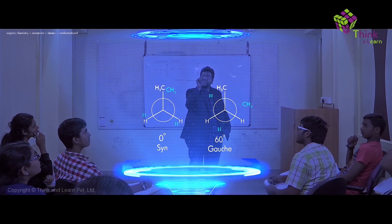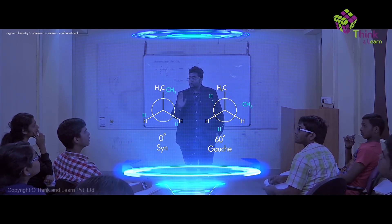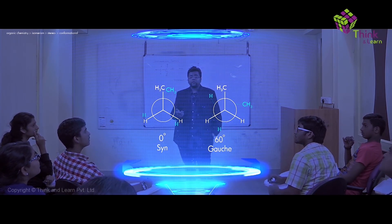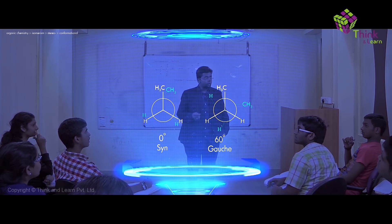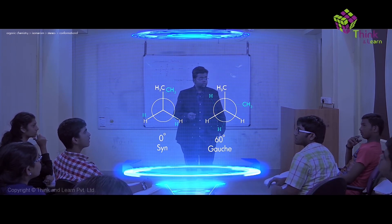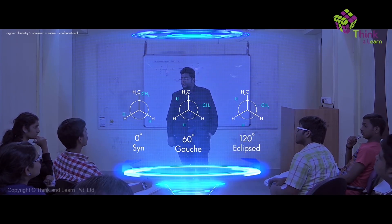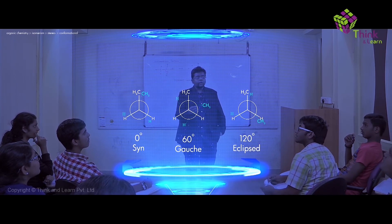What is the dihedral angle between CH3 and CH3? In the first conformation the angle was zero — it was eclipsed. Now between CH3 of the first carbon and CH3 of the second carbon, the angle is 60 degrees. This is what is called the gauche conformation.